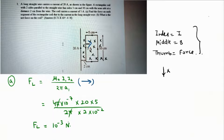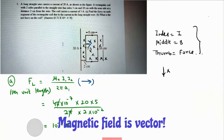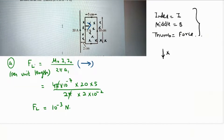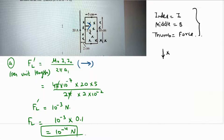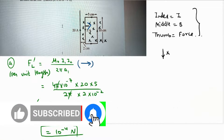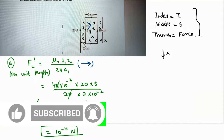That is the force per unit length on the left side of the wire. We need the total force, so the total force on the left side, F_L, equals 10⁻³ times its length. The length is 0.1 m (10 centimeters), so multiplying gives 10⁻⁴ N. Let me re-verify: cancelling gives 10⁻⁴ N, and the direction is towards the right.